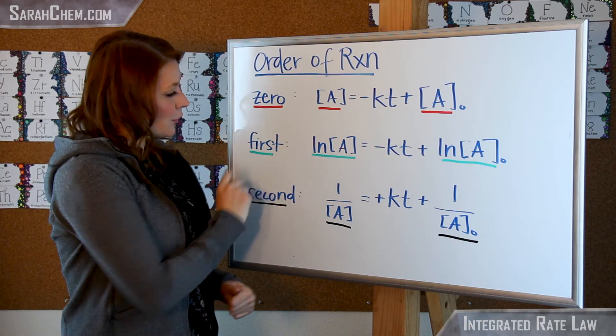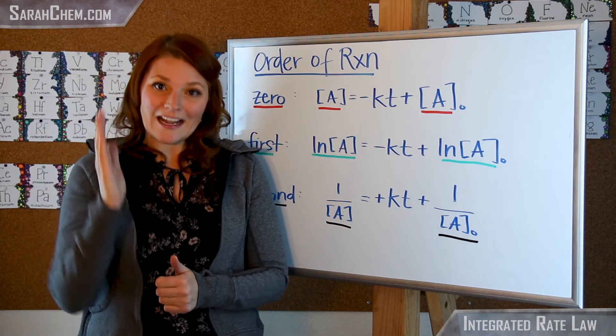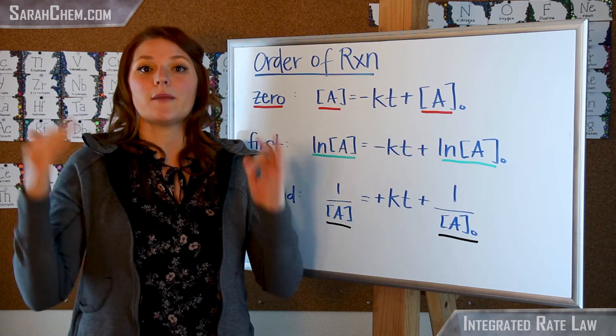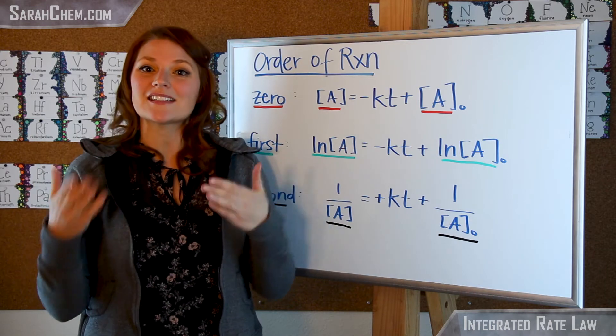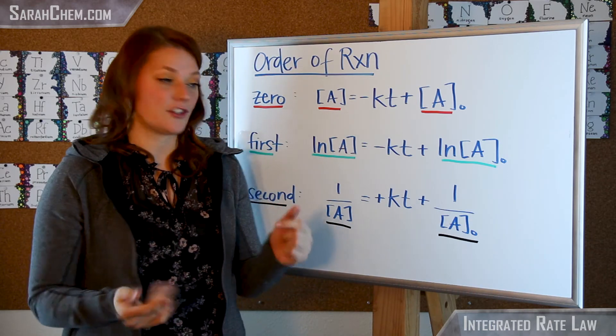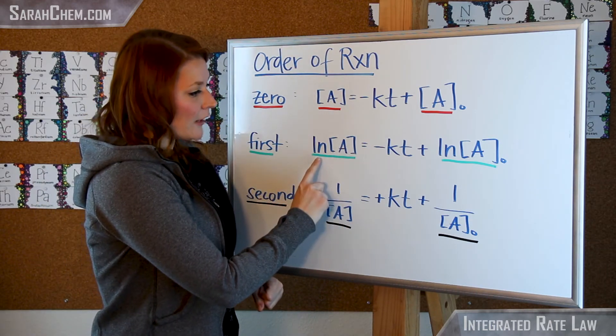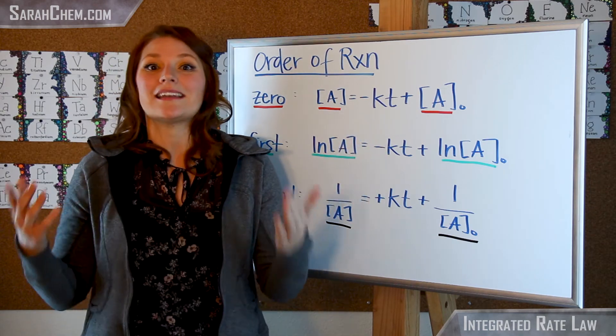On the other hand, if you have a first order reaction, you'd be plotting the natural log of the concentration over time, and that would yield a straight line. That's an indication that you have a first order reaction. So this here is going to be our natural log, and it's also having a negative slope.